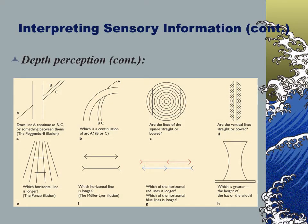Some of the classic illusions I like include the curvy lines that appear more bowed than they actually are, and things like the height-versus-width of the hat. These weird sensory cues make our perception variable.